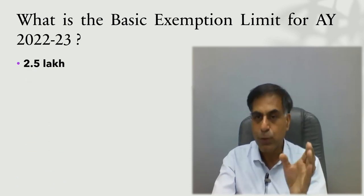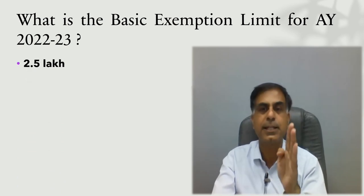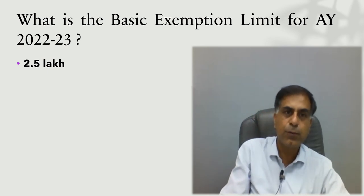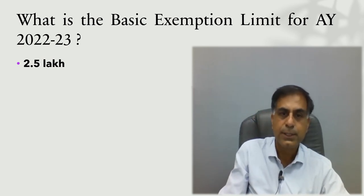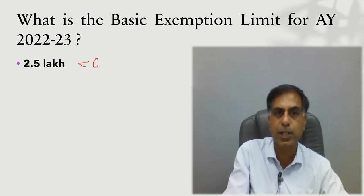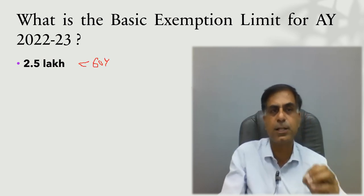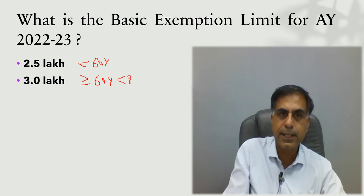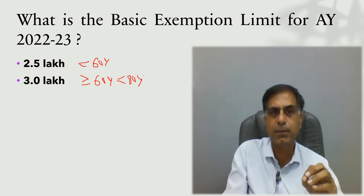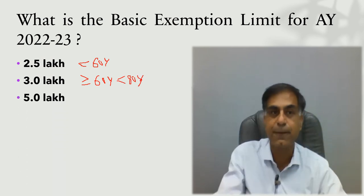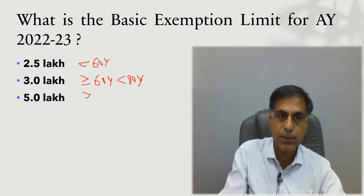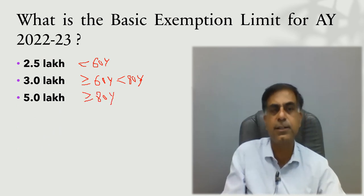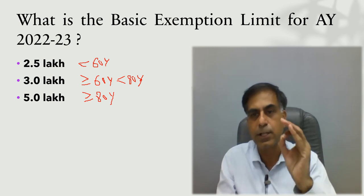For the assessment year 22-23, if your age is below 60 years — that is, you have not touched 60 years during the relevant financial year — then your basic exemption limit is Rs. 2.5 lakh. If your age is over 60 but less than 80 years, your basic exemption limit as a resident would be Rs. 3 lakh. And if your age is over 80 years, your basic exemption limit is Rs. 5 lakh.